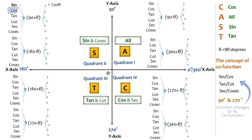Similarly, cos(90+θ) also has 90°, so the function changes to its co-function sine. Since it's in the second quadrant where cos is negative, it gives −sin θ. For tan(90+θ), it changes to cot owing to the 90°, and since tan is negative in this quadrant, it gives −cot θ. Overall, the function always changes to its co-function, and only sin(90+θ) and cosec(90+θ) are positive; all others are negative.